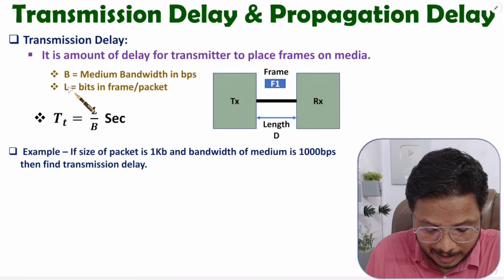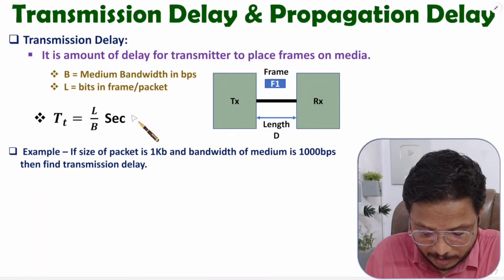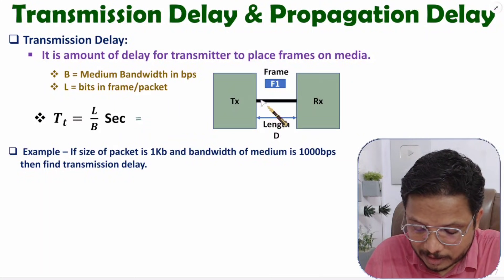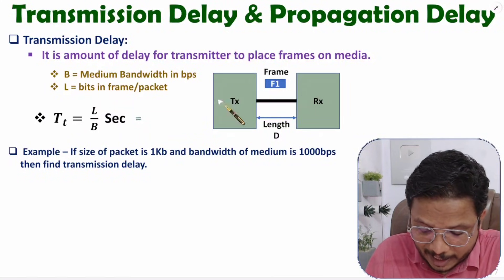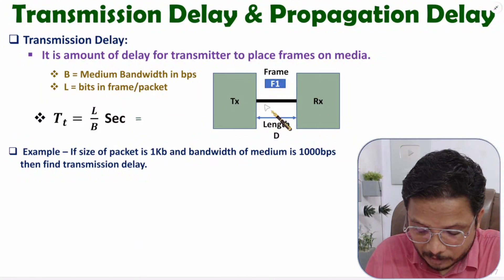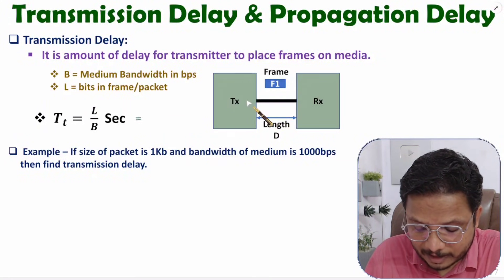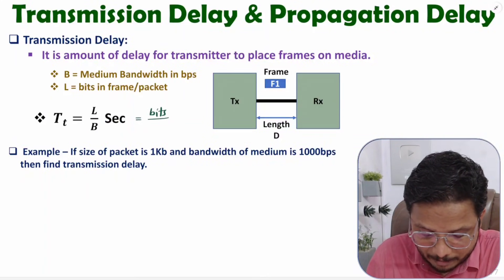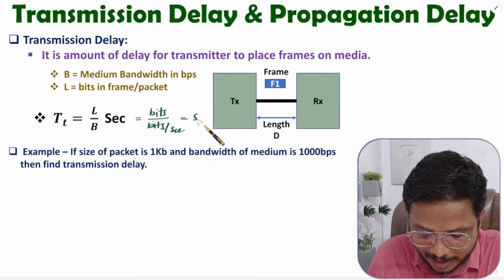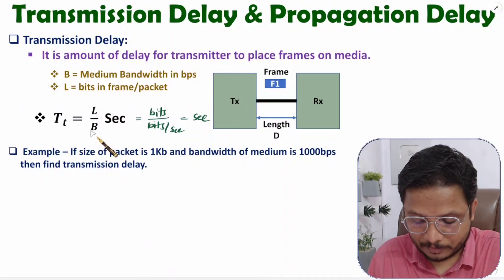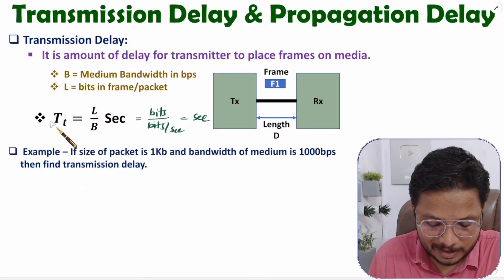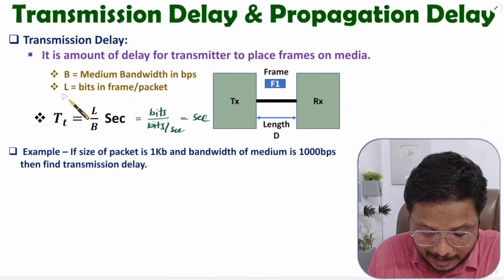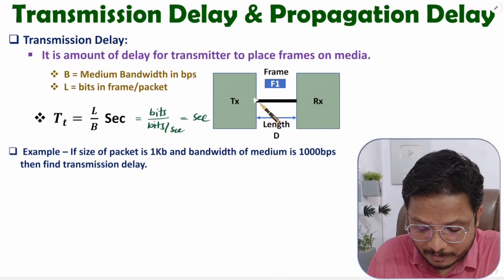You see how? For example, L is in terms of bits for a frame. So one by one, bits are getting placed on the media, and bandwidth of the media, if that is B, then with respect to that bandwidth only, this transmitter can place those data on the media. L in bits divided by bandwidth in bits per second — the bits will get cancelled and you will have transmission delay as L divided by B. So by simple mathematics, if size of frame is L and bandwidth of medium is B, then L by B gives transmission delay.